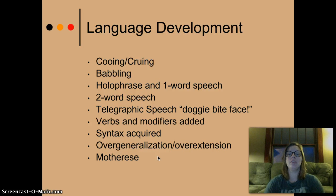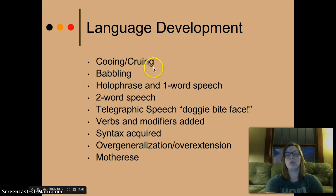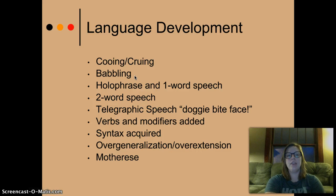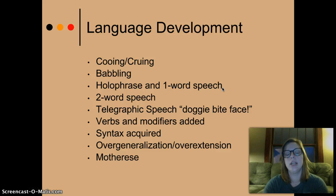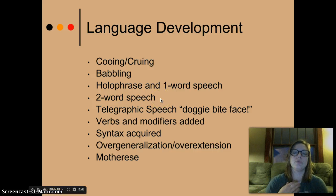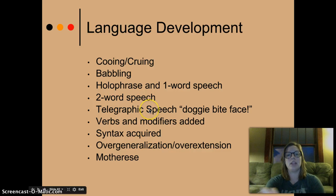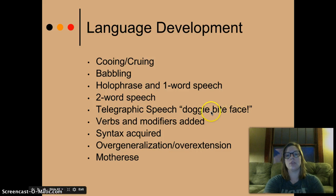Language development — this is really vague and we'll get into it more in class. Babies start with the cooing phase, then the babbling — nonsensical syllables like goo-goo-ga-ga. Then there's the holophrastic one-word speech, also called the naming stage, where they start naming things like 'mama,' 'dada.' Then there's two-word speech, like 'mama milk' — mom, get me some milk. Then telegraphic speech, where they put a noun with an action, like 'doggy bite face.'